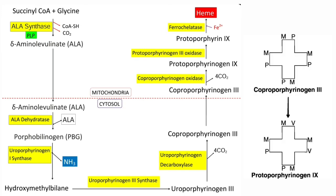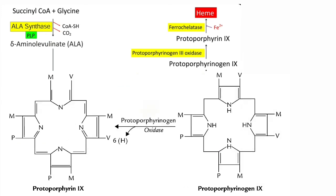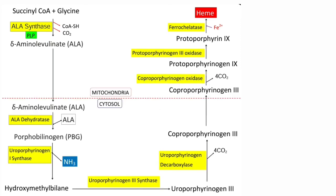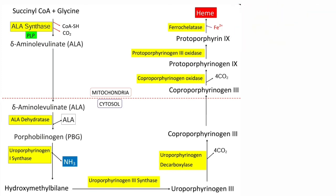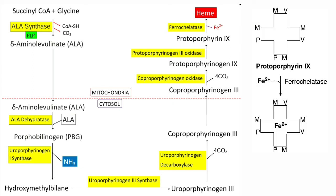During this reaction, two propionate side chains from rings 1 and 2 are oxidatively decarboxylated to vinyl groups. In the next reaction, protoporphyrinogen oxidase oxidizes methylene groups to methine groups, leading to the formation of protoporphyrin-9. The final step is the synthesis of heme, in which ferrous iron is incorporated into protoporphyrin-9. This reaction is catalyzed by ferrochelatase (also called heme synthetase), and this enzyme is inhibited by lead.